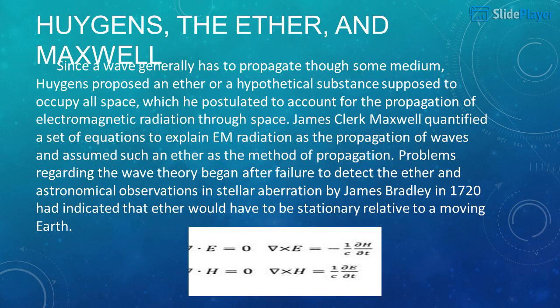Huygens, The Aether, and Maxwell. Since a wave generally has to propagate through some medium, Huygens proposed an ether — a hypothetical substance supposed to occupy all space — which he postulated to account for the propagation of electromagnetic radiation through space.